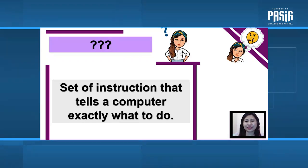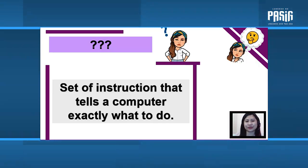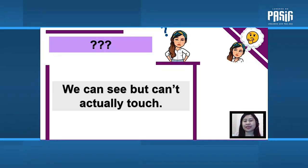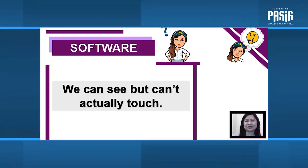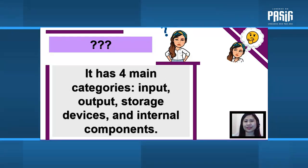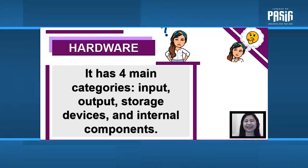A set of instructions that tells a computer exactly what to do. It's software. We can see but can't actually touch software. It has four main categories: input, output, storage devices, and internal components. The answer is hardware.